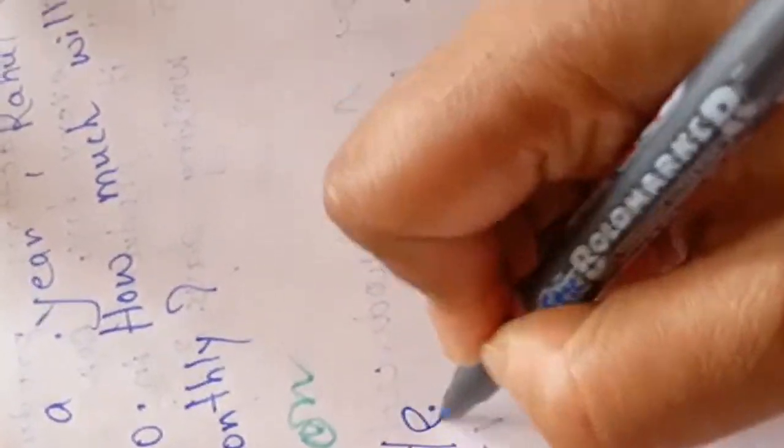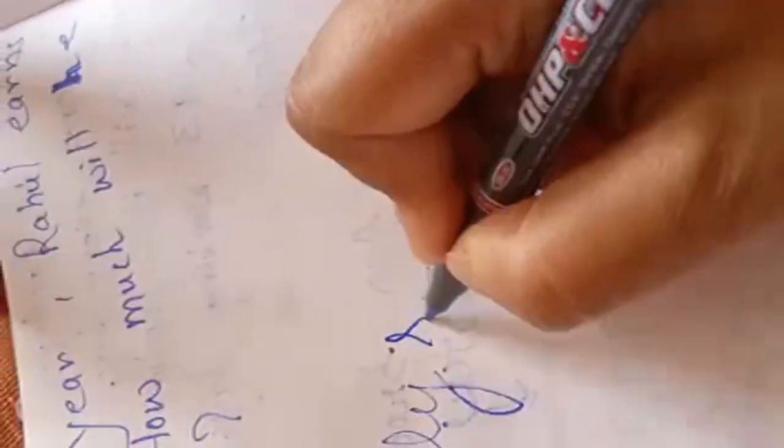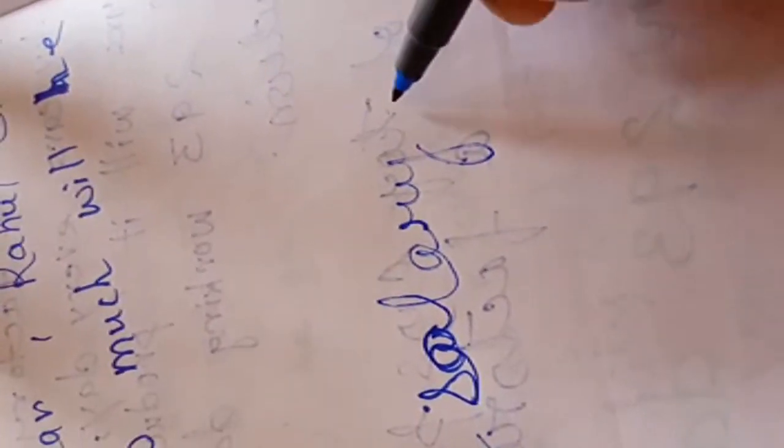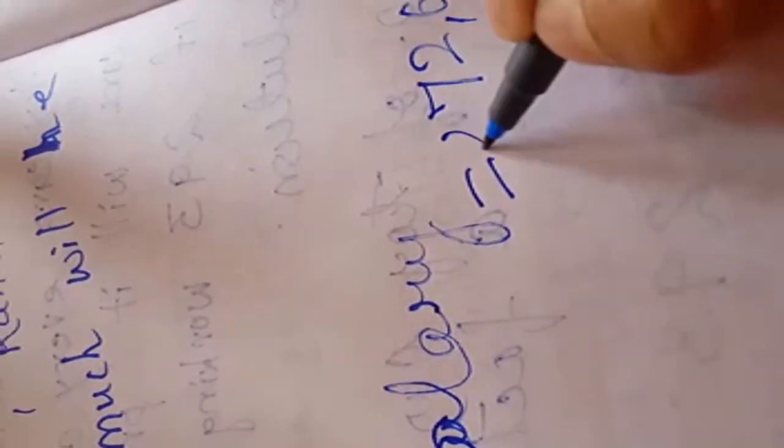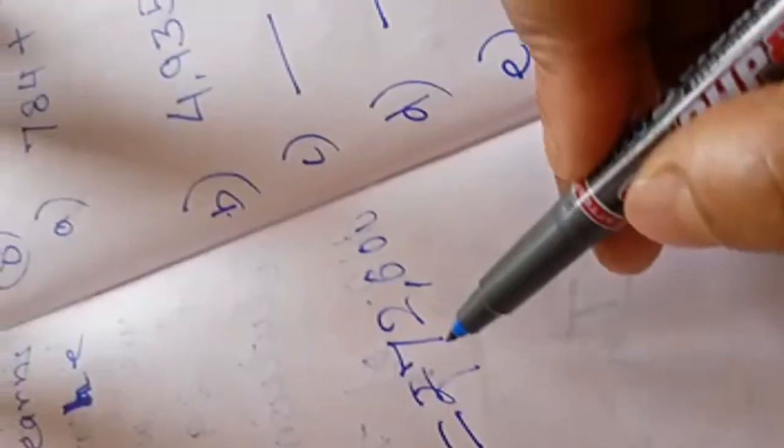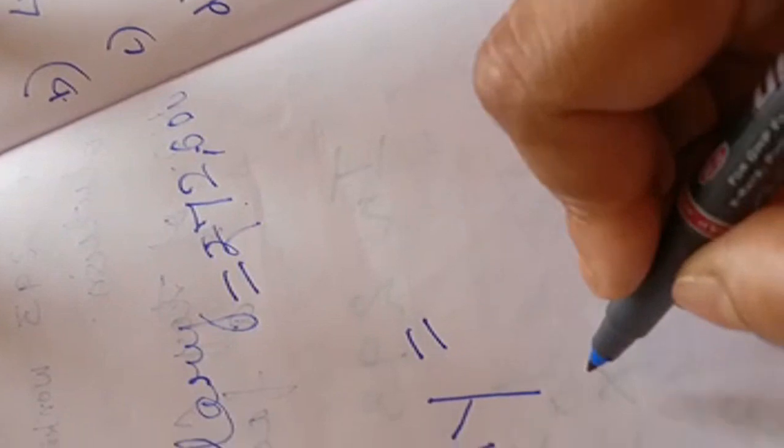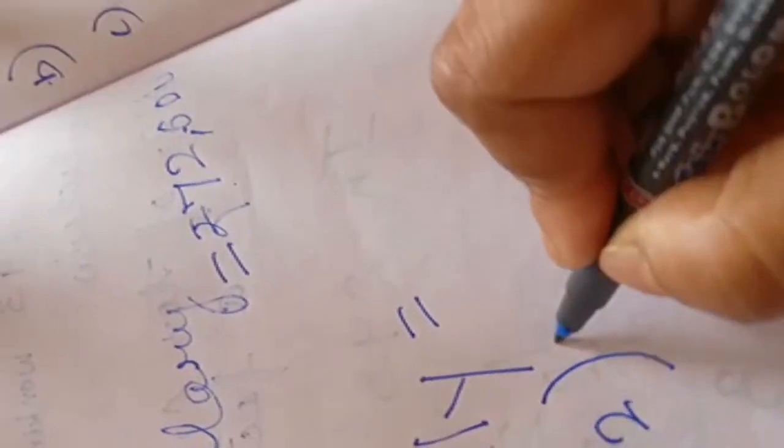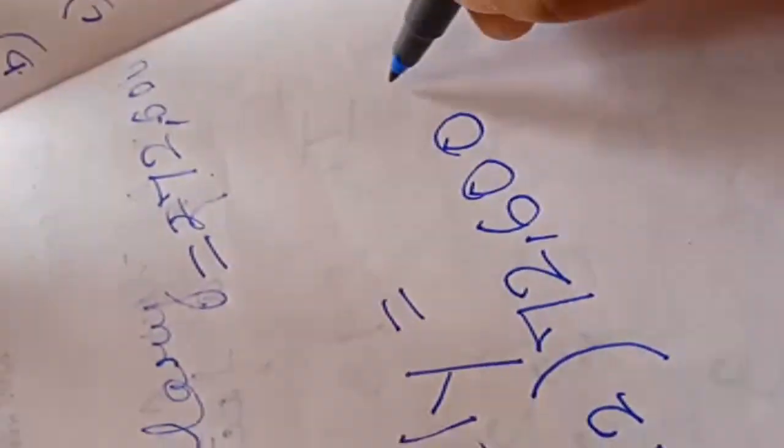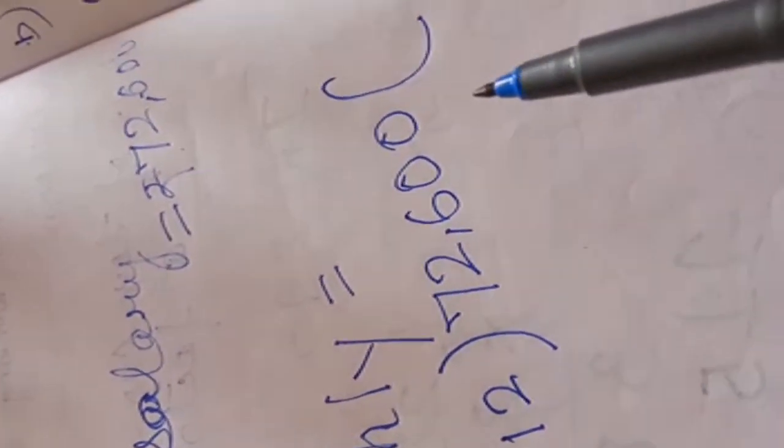Solution. Rahul earns yearly salary of 72,600 rupees. Monthly salary will be, we have to divide the salary in 12 equal parts. 12 equal parts means 72,600 will be divided by 12. Then we will be able to get 1 month salary.